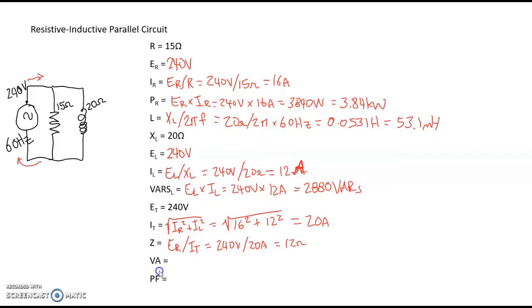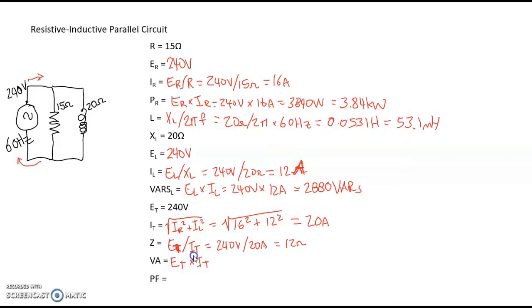As discussed in my short video on true versus reactive versus apparent power — apparent power applies when we have a resistive-inductive circuit. To calculate apparent power in volt-amps, we use total voltage times total current: 240 volts times 20 amps equals 4,800 volt-amps.